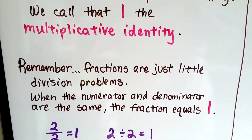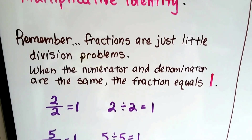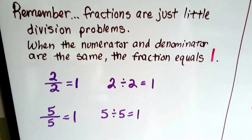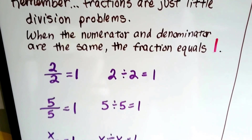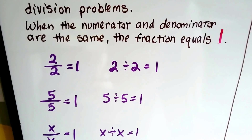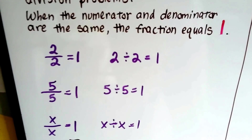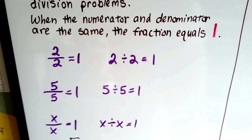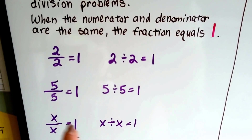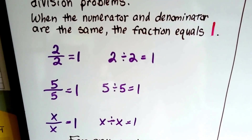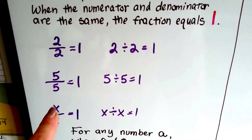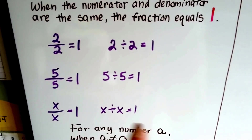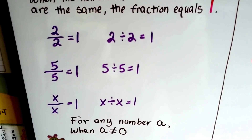Remember, fractions are just little division problems. And when the numerator and denominator are the same, the fraction equals 1. If we have 2 over 2, that's equal to 1 — that's just 2 divided by 2. If we have 5 over 5, that equals 1, which is 5 divided by 5. And if we have x over x, that's going to equal 1 — x divided by x would be 1.